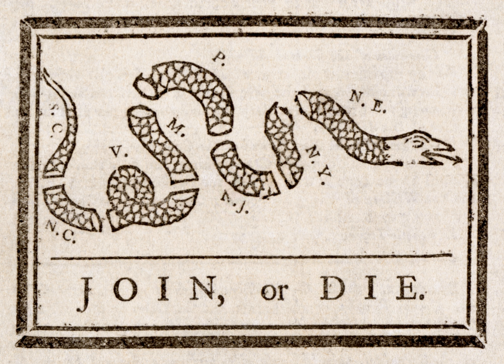Besides these thirteen colonies, Britain had another dozen in the New World. Those in the British West Indies, Newfoundland, the province of Quebec, Nova Scotia, Prince Edward Island, Bermuda, and East and West Florida remained loyal to the crown throughout the war, although Spain reacquired Florida before the war was over, and later sold it to the United States. There was a certain degree of sympathy with the Patriot cause in several of the other colonies, but their geographical isolation and the dominance of British naval power precluded any effective participation. The British crown had only recently acquired those lands, and many of the issues facing the thirteen colonies did not apply to them, especially in the case of Quebec and Florida.